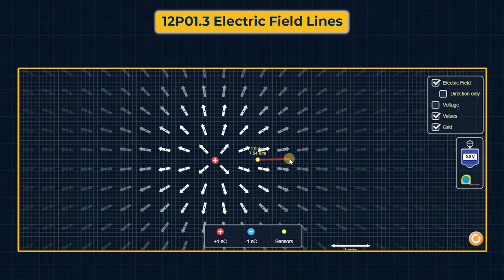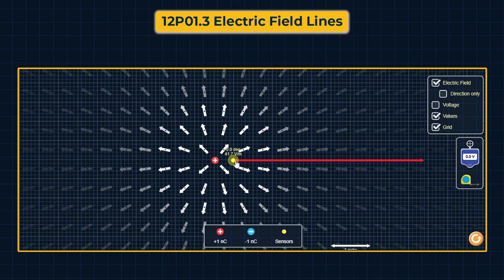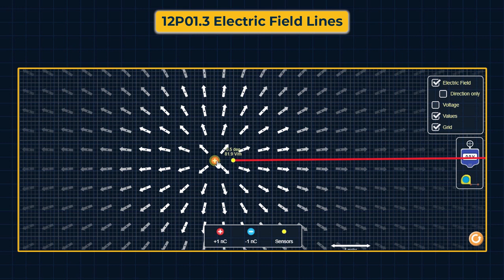यहाँ पर field की value increase होती है — 41.7 volt per meter हो जाती है। अब यदि हम इस positive charge को double कर देते हैं, यानि कि plus two nanocoulomb कर देते हैं, तो इस position पर electric field की value भी increase हो जाती है — 81.9 volt per meter। यानि कि almost double — charge increase करने पर electric field का magnitude भी double हो जाता है।